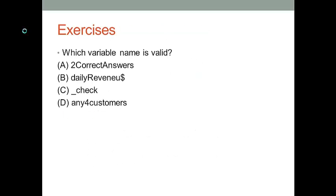Now take about a minute to think about this exercise: according to the rules we just learned, which variable name is valid? The correct answer is option D. Option A is invalid because it starts with a number. Option B is invalid because it contains a dollar sign, which is a special symbol. Option C is invalid because it starts with an underscore.